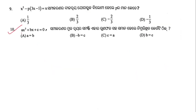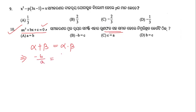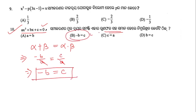Question number 10: x² + bx + c = 0. If the sum of the roots equals the product of the roots, what is the relation? We know alpha + beta = -b/a = -b and alpha·beta = c/a = c. Setting them equal: -b = c, so option B is the right answer.